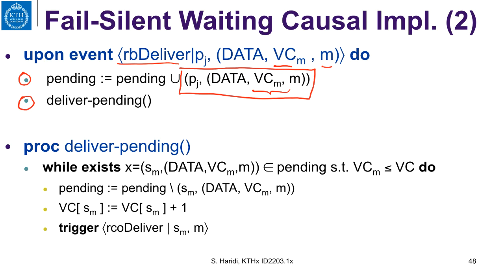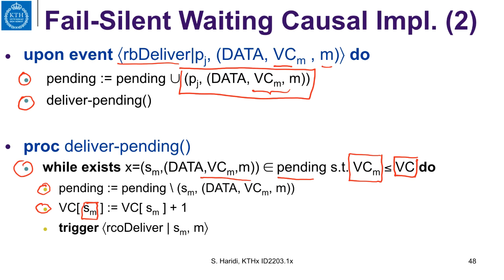Deliver_pending does the following: whenever there is a pair — a vector and a message in the pending set — such that the vector clock associated with that message is less than or equal to the local vector clock, it removes it from the pending set, increases the field in its own vector indicating one more delivery from the source process Sm, and then triggers causal delivery.